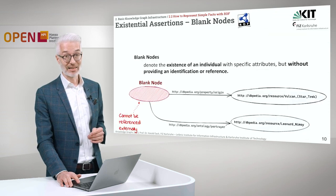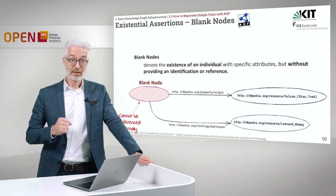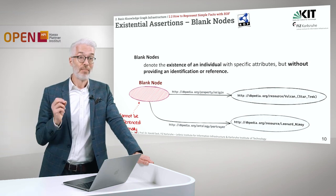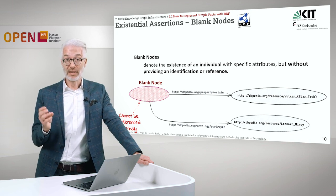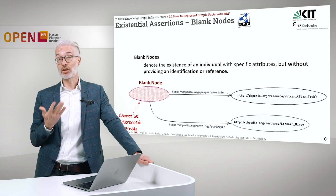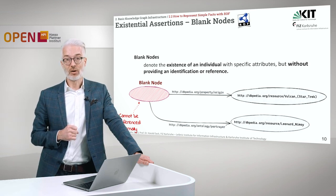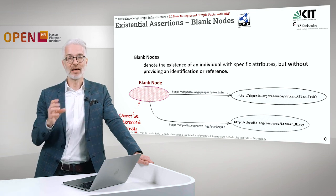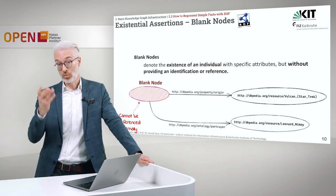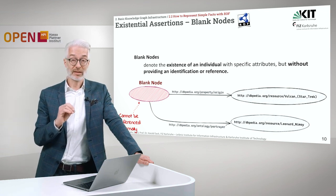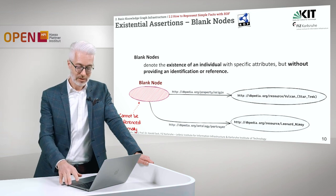Besides distinct URIs and distinct literals, we also have so-called blank nodes. Blank nodes denote the existence of an individual with specific attributes, without providing a direct identification or reference. This is a kind of existential statement. For example, you say there exists some entity which has the origin Vulcan and whose portrayer is Leonard Nimoy — but this is a blank node: we don't say exactly who or what it is. It cannot be referenced from outside, but it is useful, and you will see why and how.